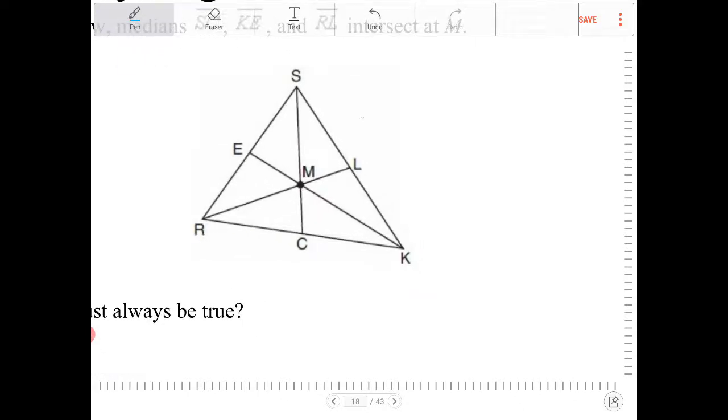So as it turns out, one of the properties behind a centroid is the centroid will partition any median in a triangle into ratios of one to two. The distance going from the centroid to the opposite side, so let's say I call MC, the length of MC, let's say we call that X,